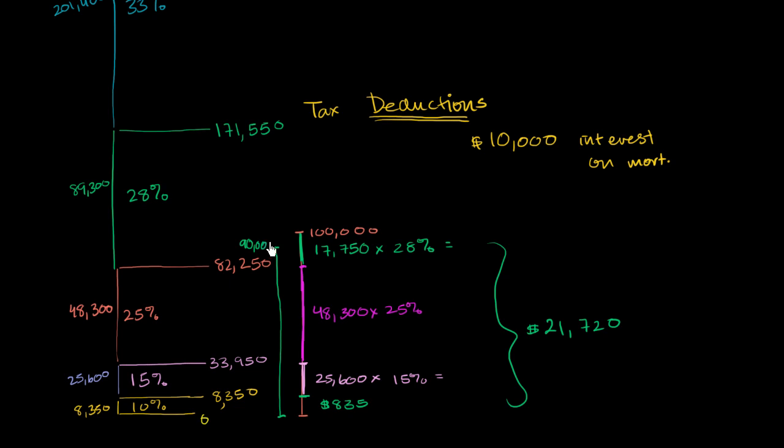So once again, the deduction does not come directly from the taxes. That would be a tax credit. The deduction comes from the reported income. So what would be the actual effect on the taxes?